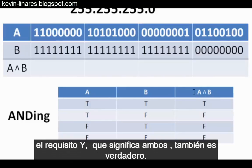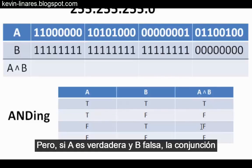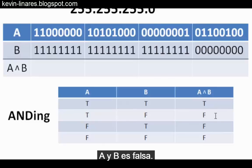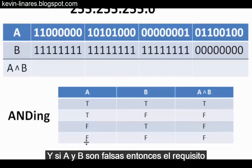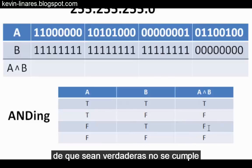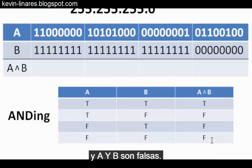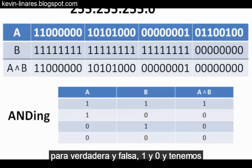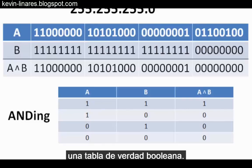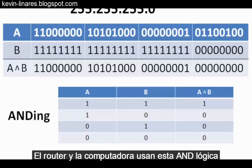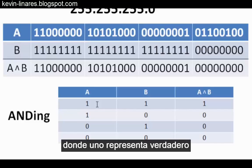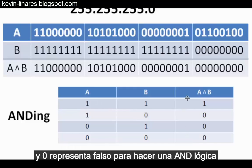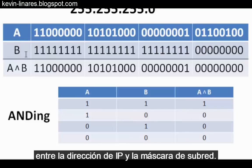If A is true and B is false, then the conjunction A AND B is false. If A is false and B is true, the requirement of AND is false. And if A is false and B is false, the requirement that both be true is not met, so A AND B is false. We convert true and false to boolean values — 1 and 0 — giving us a boolean truth table. The router and computer use this logical ANDing, with 1s for true and 0s for false, between the IP address and the subnet mask.